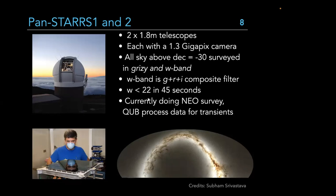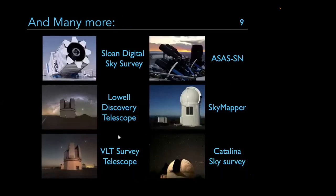PanSTARRS uses a wide band combining g, r, and i optical filters. It was set up for near-Earth object study, but people are using it to locate different types of transients. On the left you can see the camera, which is quite large. The story doesn't end there — many more survey telescopes have been set up over time.